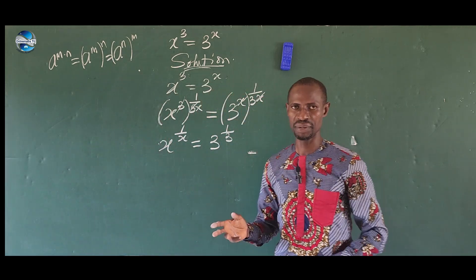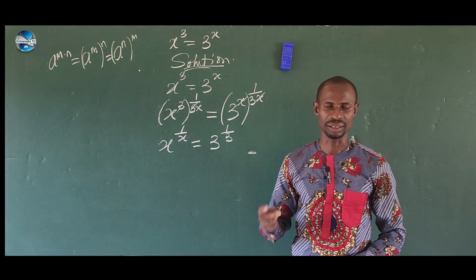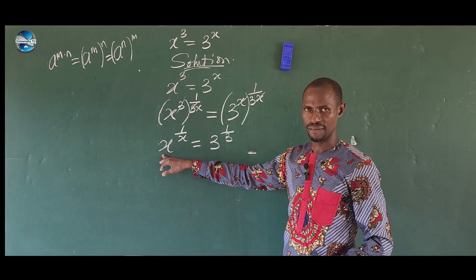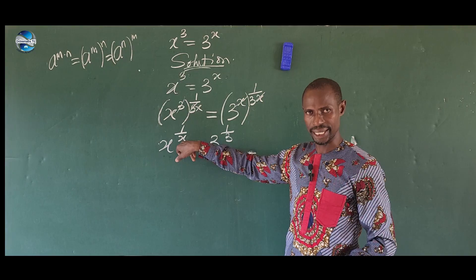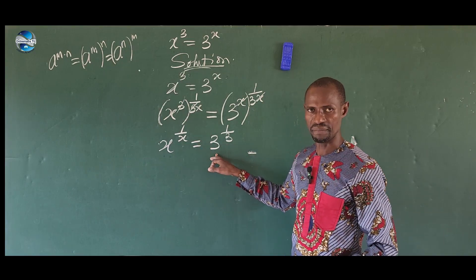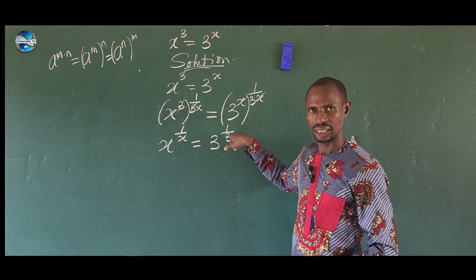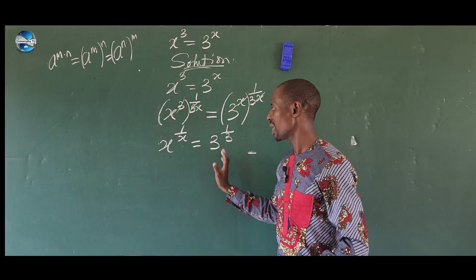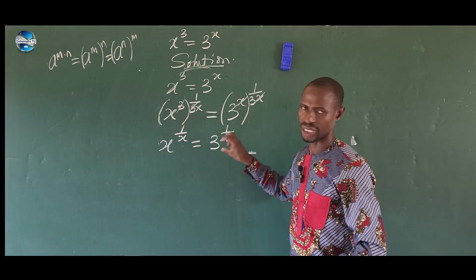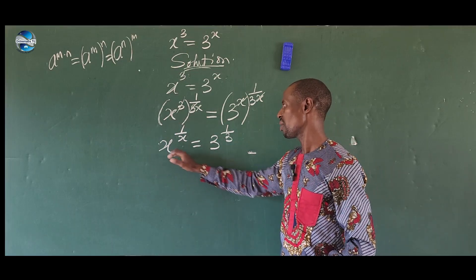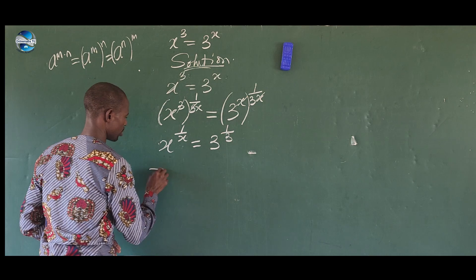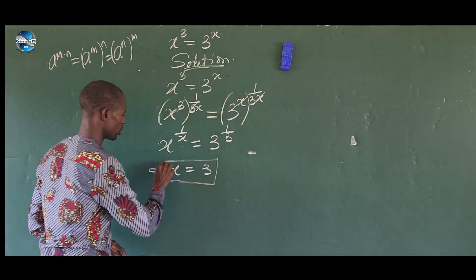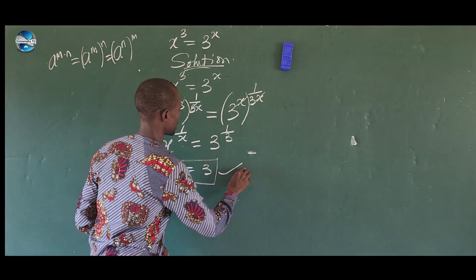Now look at what we have: x is the base raised to 1/x, and 3 is the base raised to 1/3. Since the bases and exponents follow the same pattern, we can equate the bases, giving us x = 3. This is one of the roots that satisfies this exponential challenge.